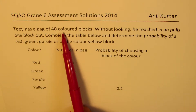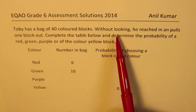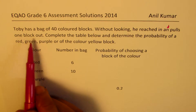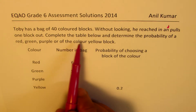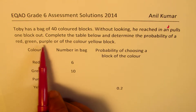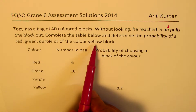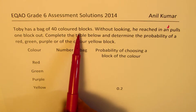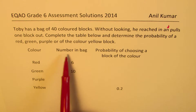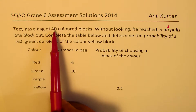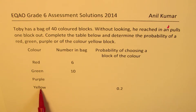Toby has a bag of 40 colored blocks. Without looking, he reaches in and pulls one block out. Complete the table below and determine the probability of a red, green, purple, or yellow block. The number of red blocks is 6, the number of green blocks is 10 out of 40, and the probability of picking yellow is 0.2.